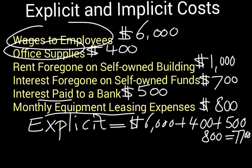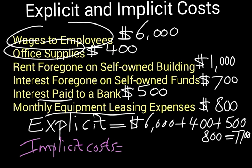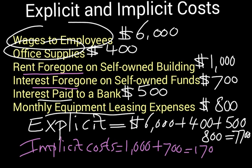Now for the implicit costs — these are not out-of-pocket expenses, but rather sacrificed or foregone earnings. If we had not run this business, how much could we have earned? Rent foregone is $1,000 per month, plus interest foregone of $700 per month. So the total implicit costs add up to $1,700.